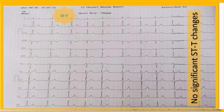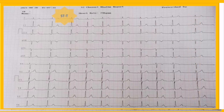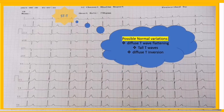You might see some slight ST elevations or depressions, but these are not clinically important and are considered normal variations. As for T waves — T waves are due to ventricular repolarization and among electrocardiographic waves, T waves have the most normal variations, ranging from diffuse flattening to tall waves. Even diffuse T inversion can sometimes be normal.